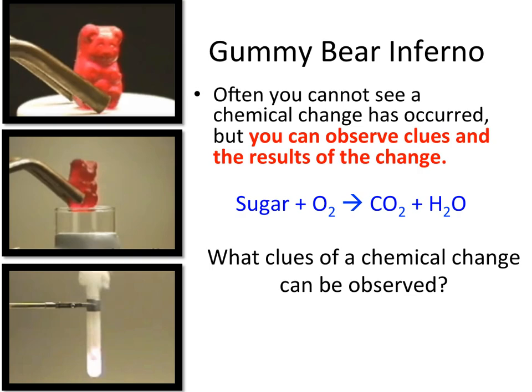What clues of chemical change can we observe? We can see a whole bunch of things. We can see that there's light, and there's some kind of vapor produced. There's going to be a change in volume, there might be a change in odor, and there certainly would be a change in taste. These are all different things we can use to figure out if a chemical reaction happened.